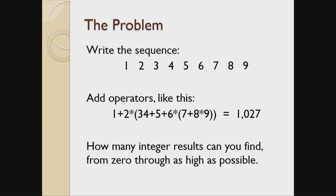Then you can add operators between the numbers — subtract, multiply, divide, or power. You can use parentheses freely, and if you want, you can omit an operator between two digits, which gives you the number 34 instead of an operator there.